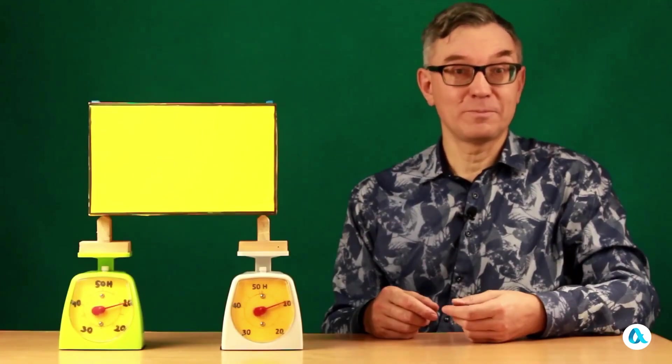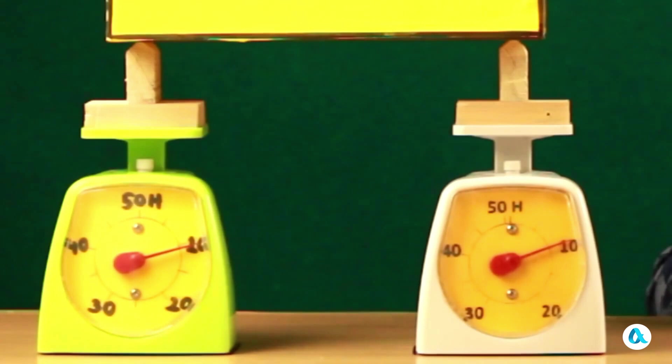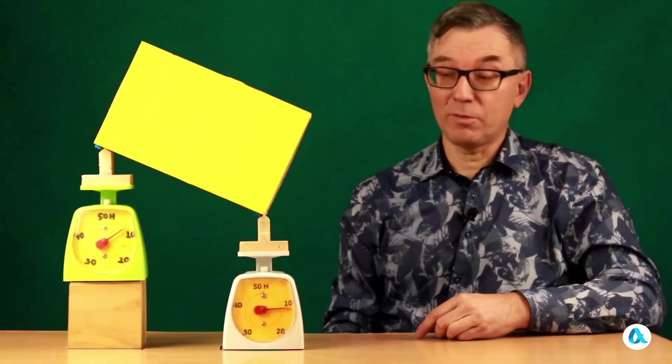Now we'll consider a much simpler problem in which we'll actually get a concrete answer. This will be a problem about how two people carry a wardrobe. As long as they're walking on a horizontal surface, each person bears an equal load. In our model, the movers are replaced by these scales. The scales each show 10 newtons. Now the movers have stepped onto the stairs, and now the load on them is different.